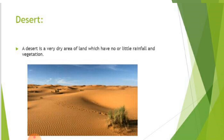Many animals live in deserts, like insects, reptiles, birds, and mice. The camel is known as the ship of the desert, because people who live in the desert use camels for transportation. Camels store water in their humps, which is why they are able to stay without water for many days.